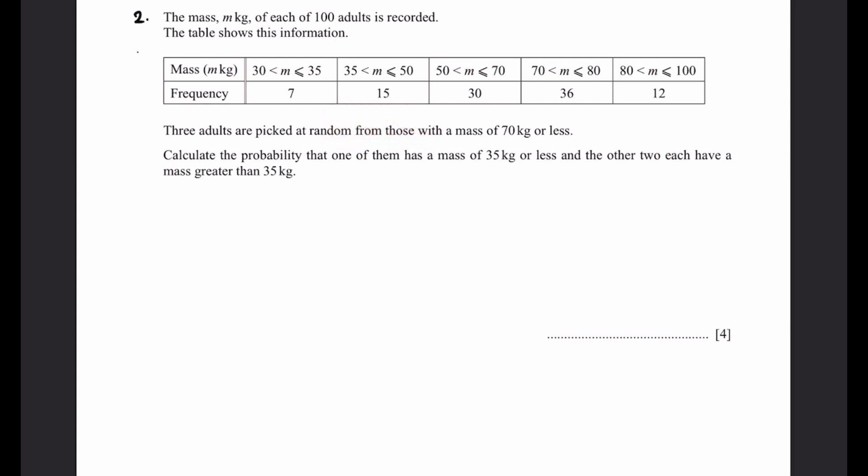Now, the second criteria which we have is the probability that one of them will have a mass of 35 kgs or less, which will be, in this category, 7 out of a total of 52. So this is our first person already, 7 by 52, probability of picking this person, because we are only considering this region here.